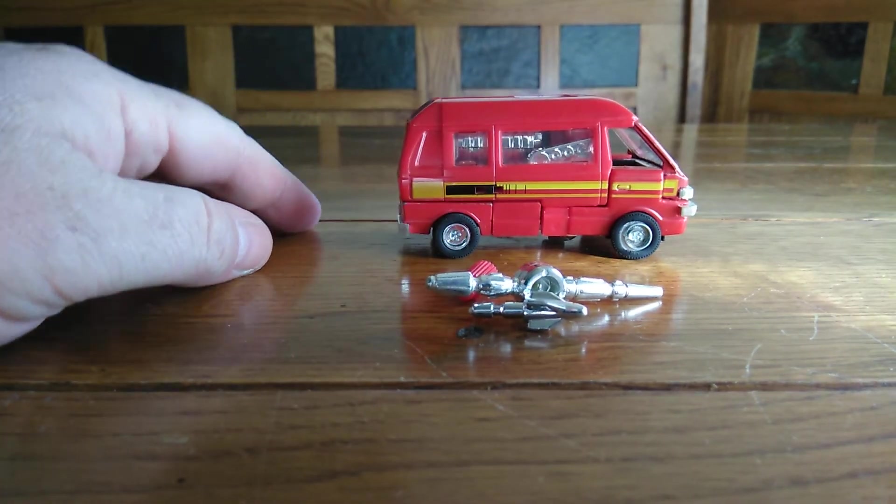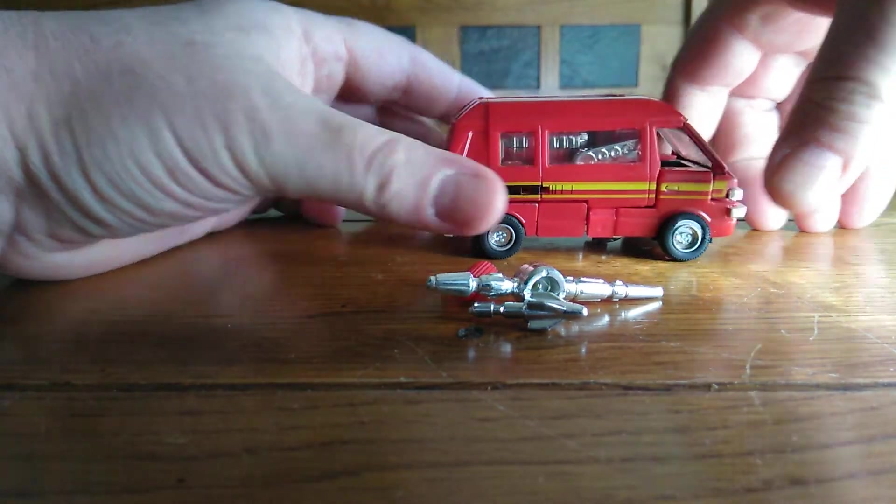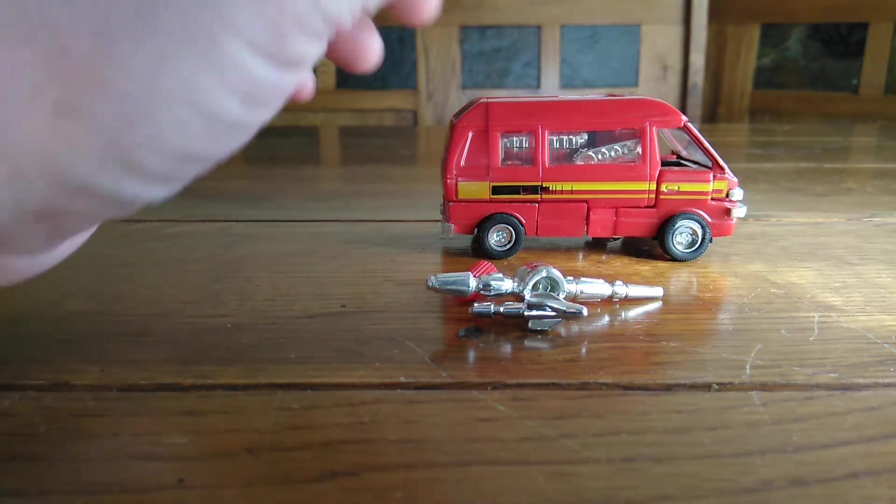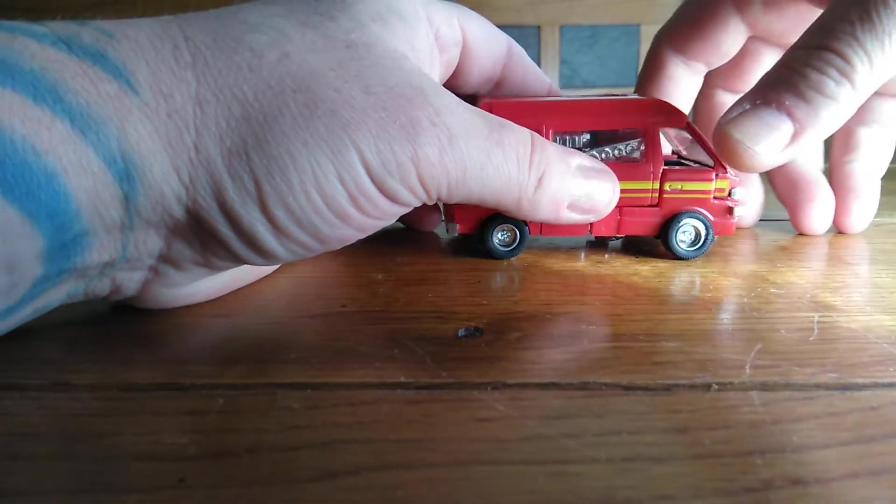If you want to see how he transforms back, I can do that really quick. Hold on. Well, okay. So if you get the van, so say you bought the van, he's going to come like this in the package. So in order to transform him, you're going to remove this piece.